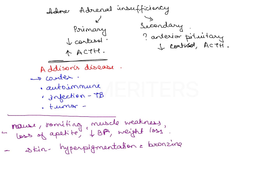The bronze color of skin is most visible on scars, skin folds, and pressure points such as the elbow, knee, knuckles, and toes. The oral mucosa is also pigmented, with diffuse pigmentation of the gingiva, tongue, hard palate, and buccal mucosa.